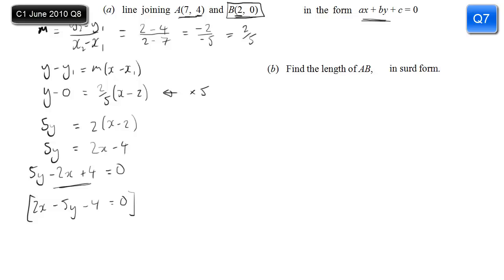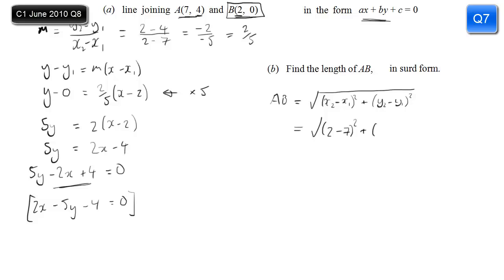Part B: find the length of line segment AB. Using the formula based on Pythagoras: square root of x2 minus x1 squared plus y2 minus y1 squared. For the x-coordinates: 2 minus 7 squared. For the y-coordinates: 0 minus 4 squared. That's the square root of minus 5 squared plus minus 4 squared, which is the square root of 25 plus 16, so root 41.